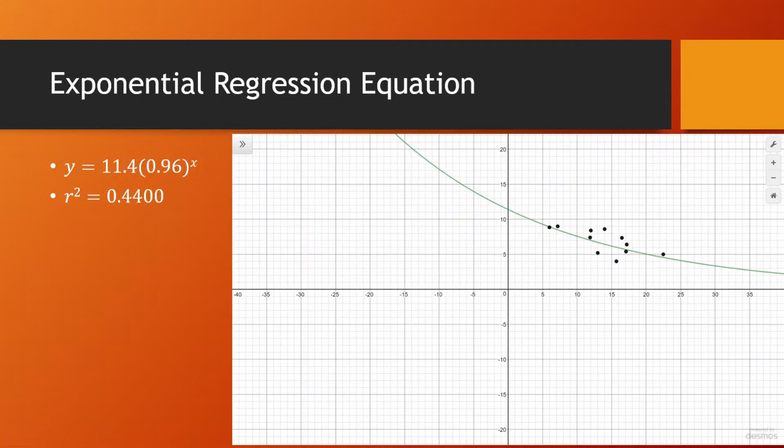Now we're on to our final regression equation the exponential with an r squared value of 0.4400. So you can see it doesn't really do a great job there's a lot of spacing between the curve of best fit and the higher lower points and it doesn't intersect many points. So it's really not going to be one of the best options.